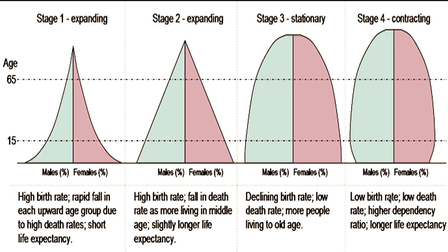In stage four, a low birth rate means a smaller number of births, but more numbers in the middle and more people growing into old age who live long. Understanding these stages gives you a fuller picture of what the population pyramid is all about.